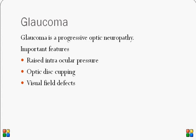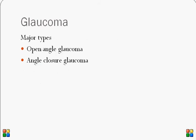Three important features of glaucoma are: first, increased intraocular pressure — the normal intraocular pressure is between 10 to 21 millimeters of mercury, and any pressure more than 21 can be considered a risk factor. Second is optic disc cupping — the optic disc is the part at the back of the eye where the retinal blood vessels start. Third is visual field defect — the field of vision starts decreasing in glaucoma.